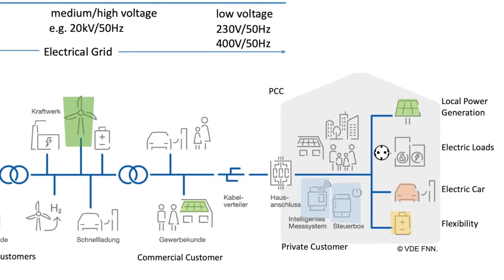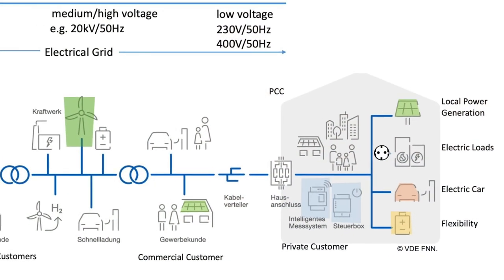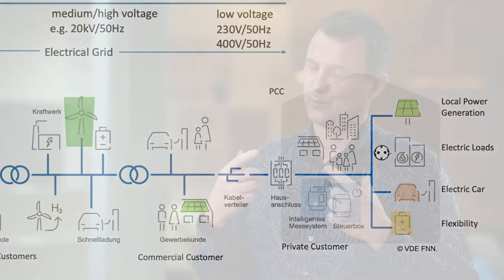Since voltage is fixed, if we want to increase power — for example, to double the light bulb size — we need to increase the current, and more current requires a larger cross-section cable. On this low voltage cable there are also other customers connected: commercial customers, charging stations, and of course many more households. Following the cable of our low voltage system, we end up at a transformer — the symbol with the two rings — whose main task is to boost the voltage to a higher level, for example to 20 kilovolts, reaching the medium voltage distribution grid.